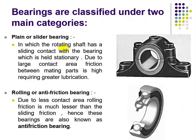Bearings are classified under two main categories: plain or sliding bearing, and rolling or anti-friction bearing. In plain or sliding bearings, the contact between the bearing and shaft is sliding contact — the full shaft area is in contact with the bearing. The bearing is stationary while the shaft rotates inside it. The second type is the rolling or anti-friction bearing.